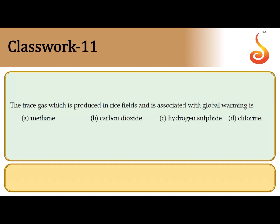The 11th question: the trace gas produced in rice fields associated with global warming. Rice fields have stagnant water, putting soil biota and plant roots under anaerobic conditions. There is production of methane gas by methanogens in the water. Methane is a major contributor to the greenhouse effect, coming only next to carbon dioxide. So rice fields involve the production of methane, which is the trace gas involved in global warming. The correct answer is option A.